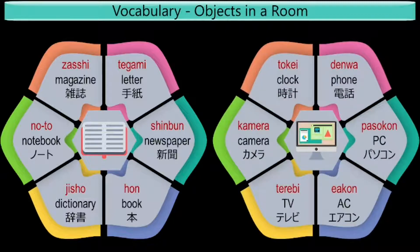The first one is Denwa, which means phone. Next is Pasakon, which is the short form of personal computer. Next is Aircon, which is the short form of air conditioner. Next is Terebi, which is the short form of television. There are so many contracted words in Japanese. In fact, abbreviated and contracted words are a common feature. Long words are often contracted into shorter forms, which then become the predominant forms. I'll give you one more example — all of you must have used a remote to control your TV. In Japanese, remote control is called Rimokon.